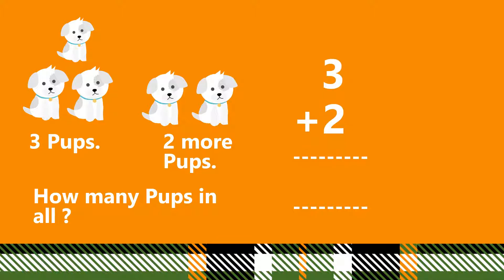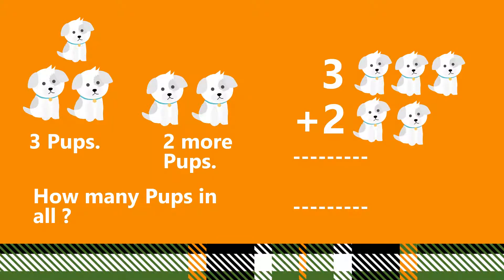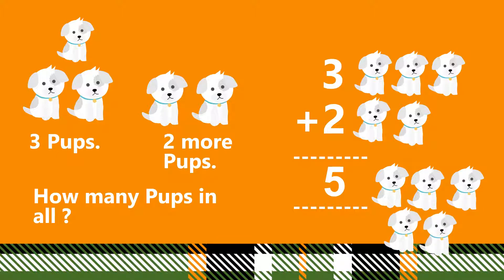First we have three puppies, then two more puppies came. How many pups in all? So we will add three and two. Three pups plus two pups. In order to add three and two, we will count all the puppies together. Let us count: one, two, three, four, five. Five puppies in all. So three plus two is equal to five. How many pups in all? Five pups in all.